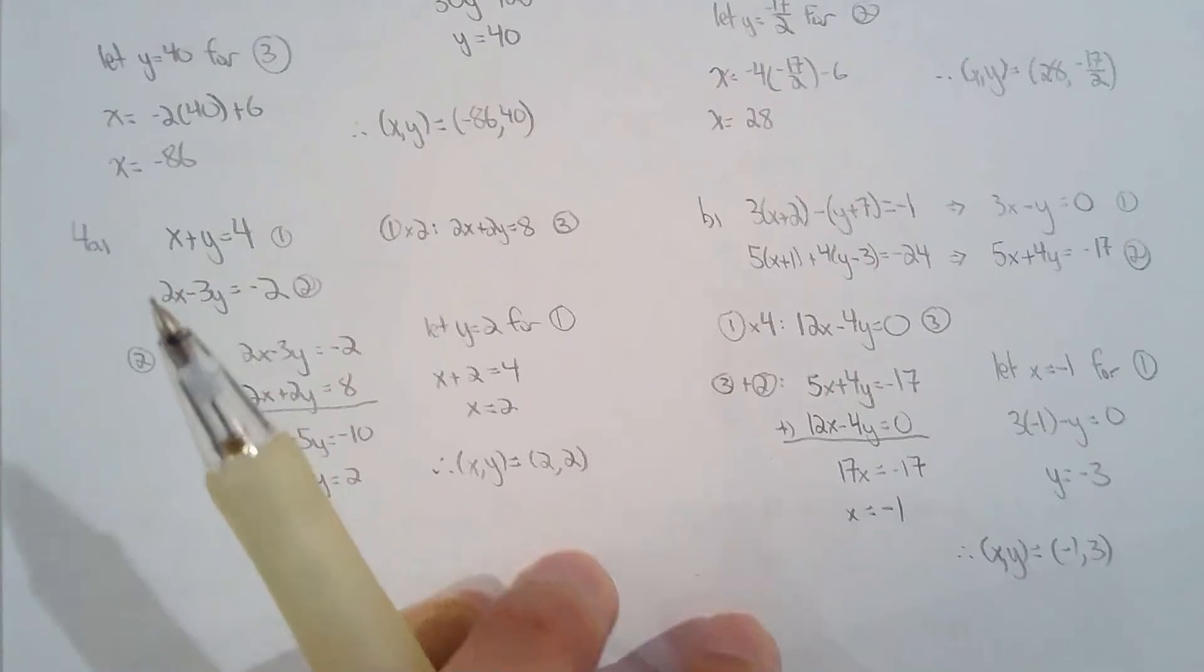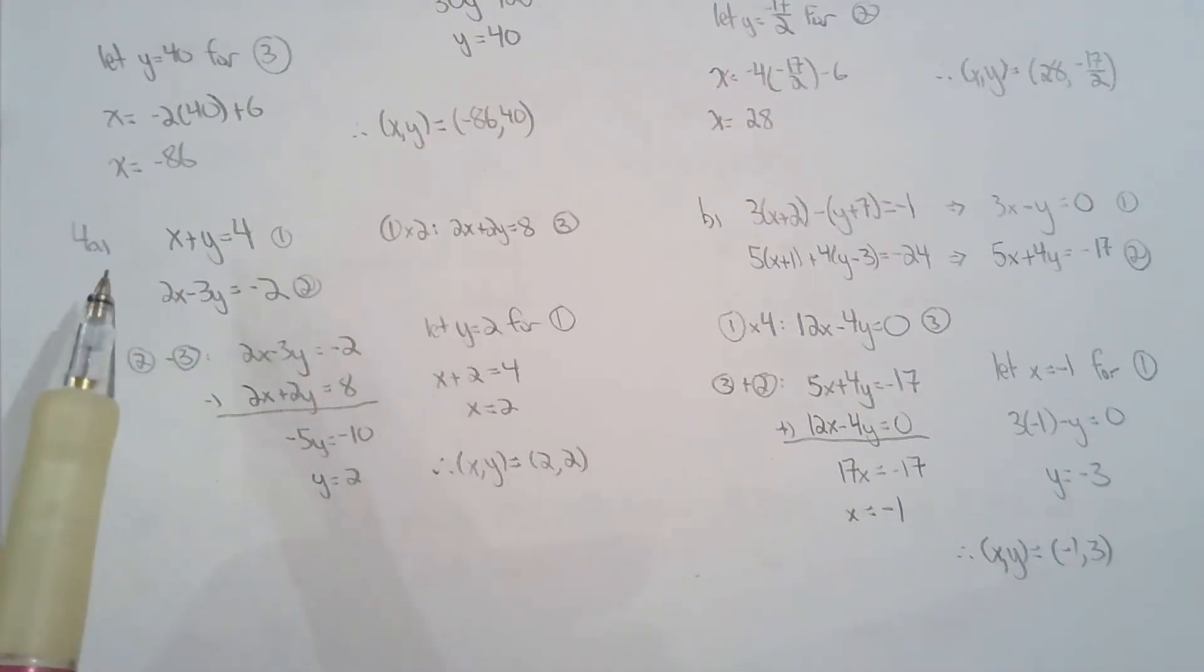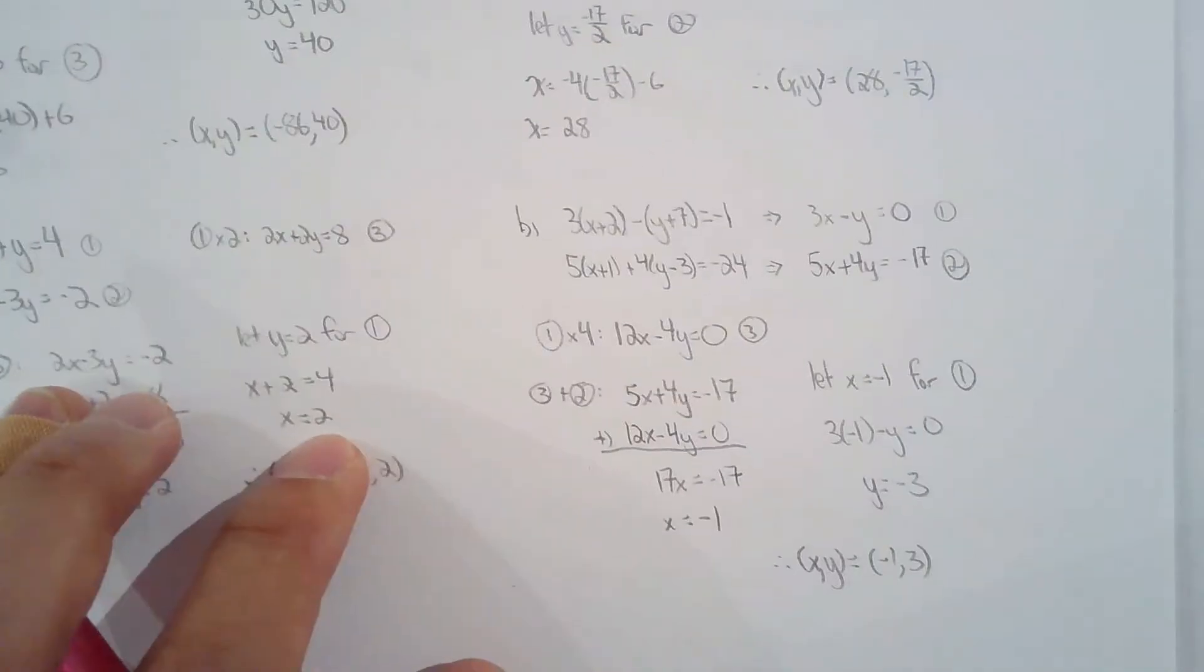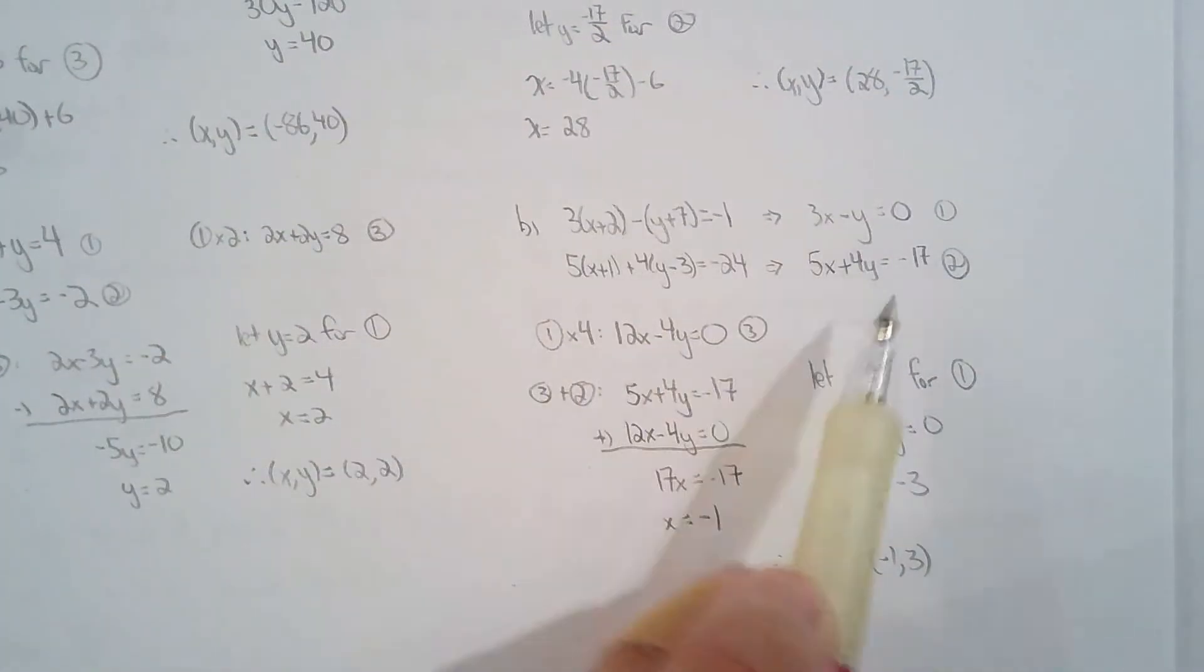For question 4, they want me to solve by elimination. No problem. So I chose to eliminate x for 4a. You could have done differently. But the beautiful thing is, we'll both get the same solution. For 4b, you just have to do some expanding and simplifying first. No problem. And then you can easily solve by elimination.